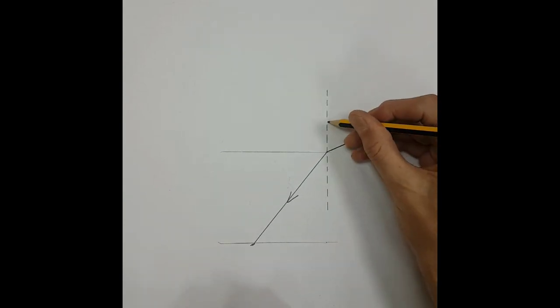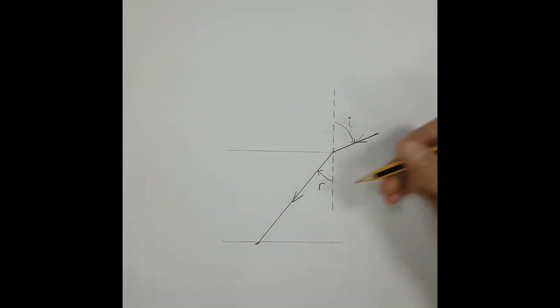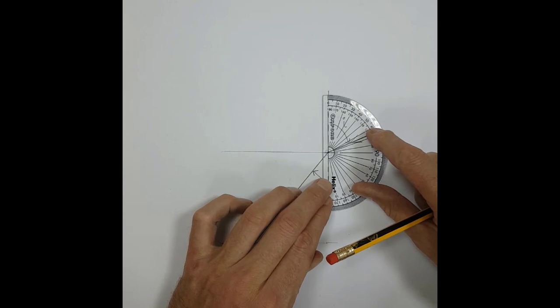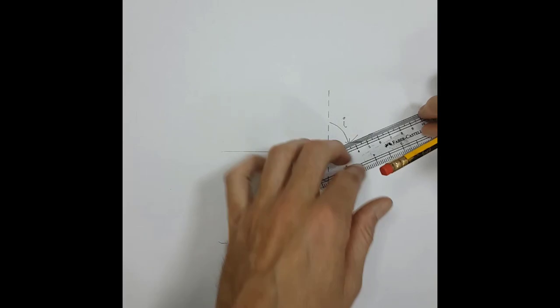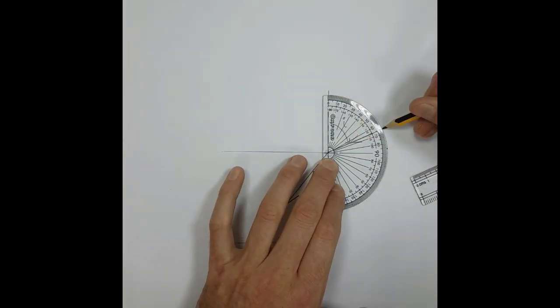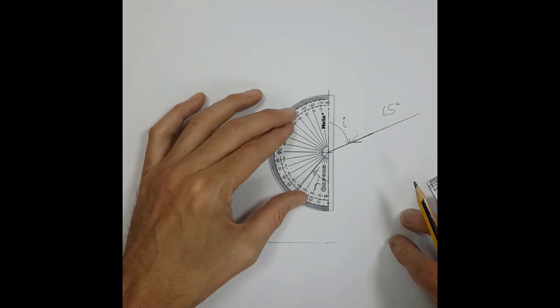So next we just need to line up the zero along the normal to measure the angle. My line wasn't quite long enough, and we get 65 degrees. Turn the protractor around and again line it up and measure it off, and we've got 40 degrees there.